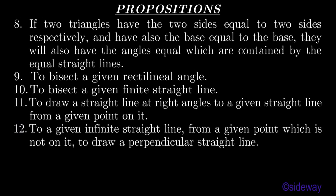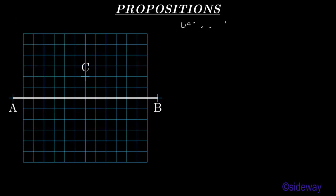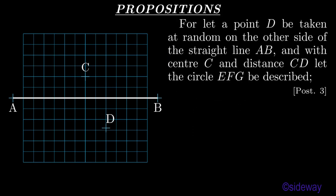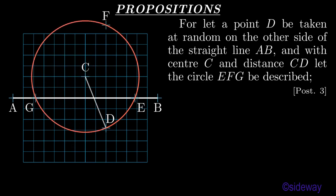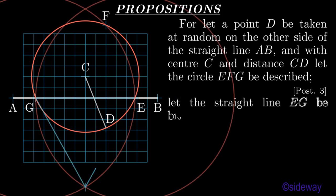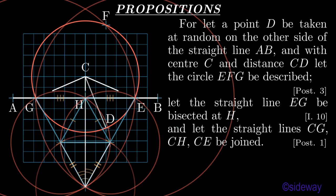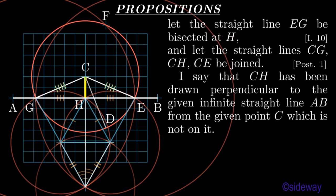Proposition 12. To a given infinite straight line, from a given point which is not on it, to draw a perpendicular straight line. Let AB be the given infinite straight line and C the given point which is not on it. Thus it is required to draw to the given infinite straight line AB from the given point C, which is not on it, a perpendicular straight line. For let a point D be taken at random on the other side of the straight line AB, and with center C and distance CD let the circle EFG be described, by Book 1 Postulate 3. Let the straight line EG be bisected at H, by Book 1 Proposition 10. And let the straight lines CG, CH, CE be joined, by Book 1 Postulate 1.